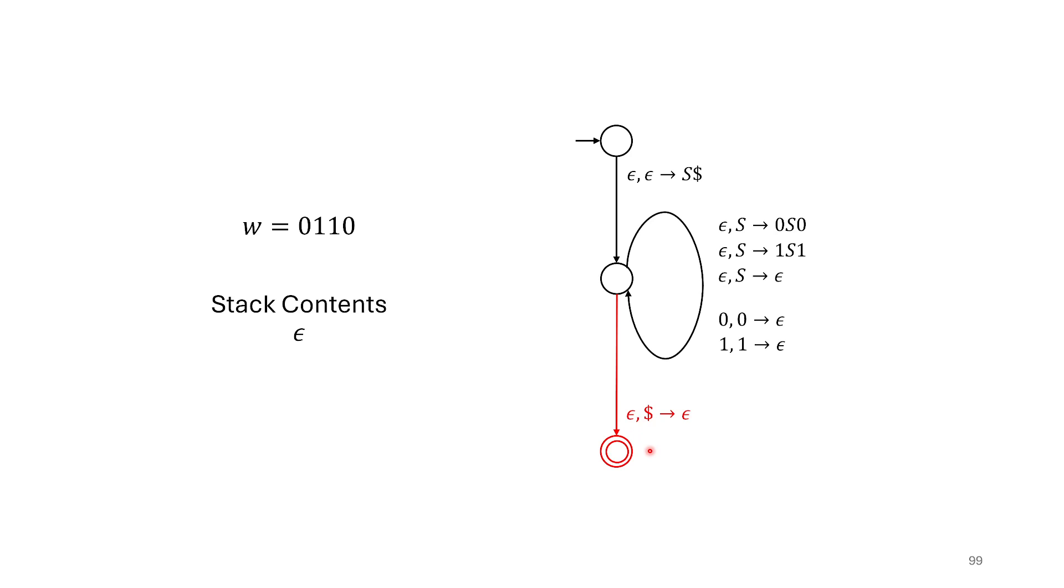So that's just an example of how this machine that we've created can process a string that would have been generated by our grammar. And I hope that fills in the intuition of how we can simulate a context-free grammar with a pushdown automaton and thus showing that the languages generated by context-free grammars must be contained within the languages accepted by pushdown automata. That's one of the branches of our two-pronged theorem. And I thank you for watching this video. And in the next video, we'll prove the other branch.